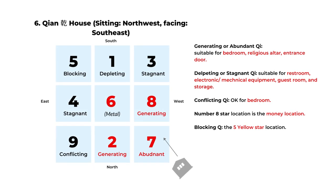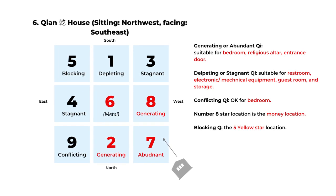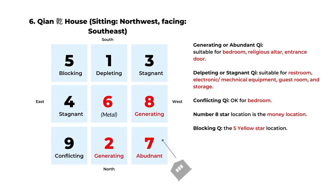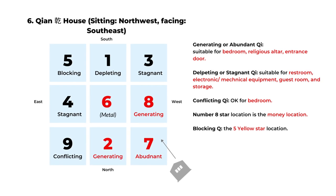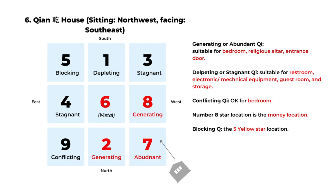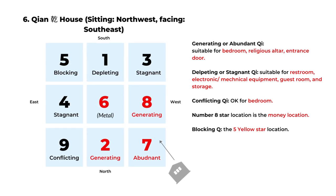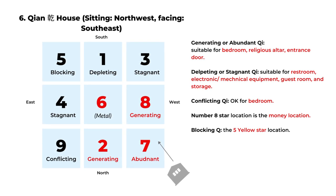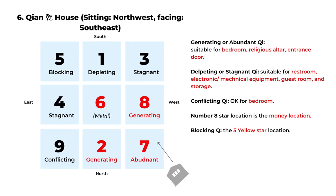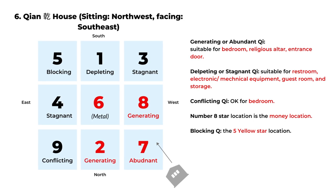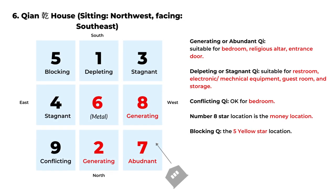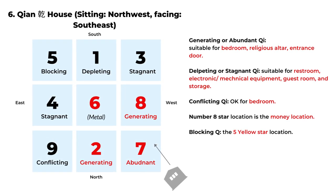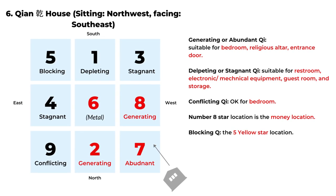The next chart is the Qian house — when the house is sitting on the northwest side and facing southeast. We skip number five because number five is the center; it doesn't have a house chart. Even though we have nine stars, the center one doesn't have a sitting and facing direction, so there's no specific chart for it. For the Qian house, number six goes to the center. The number seven abundant area is in the northwest, and the generating Qi is in the north and the west, so those areas are auspicious for important spaces.